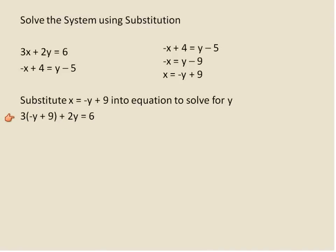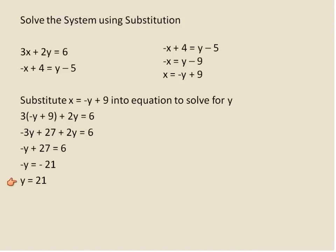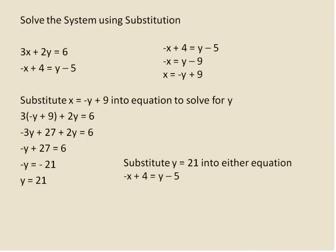Substituting gives us: 3 times (negative y plus 9) plus 2y equals 6. Using the distributive property: 3 times negative y is negative 3y, and 3 times 9 is 27. Joining the y terms: negative 3y plus 2y gives me negative y. Subtracting 27 from both sides and then dividing both sides by negative 1 tells me that my y value is 21. Now, like I said, I could substitute y equals 21 into both equations, but I'm feeling comfortable with substitution, so I'll pick just one.